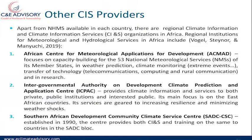There are also regional institutions that provide climate information. The African Centre for Meteorological Application for Development — ACMAD — focuses on capacity building for the 53 national meteorological services of African Union member countries. It focuses on weather prediction, climate monitoring, extreme events, transport technology such as telecommunications and computing, and research. It is a very crucial body.